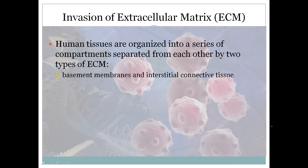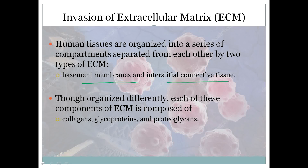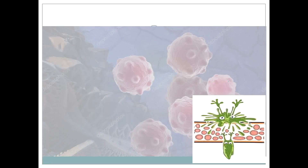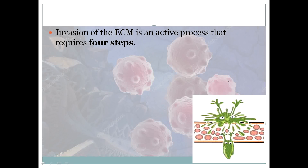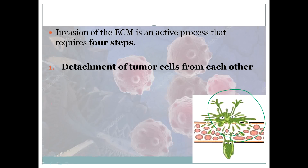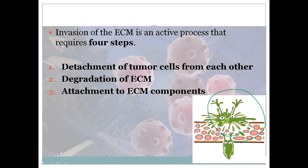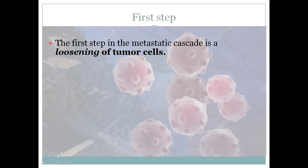Now we discuss each step in detail. Invasion of the extracellular matrix is achieved in two types because there are two types of ECM: the basement membrane and the interstitial connective tissue. They are organized differently, each with different components of collagen, glycoproteins, and proteoglycans. Invasion of the extracellular matrix is an active process. First there is detachment of tumor cells from each other, then degradation of ECM, then attachment to ECM components, and finally migration of the tumor cell.